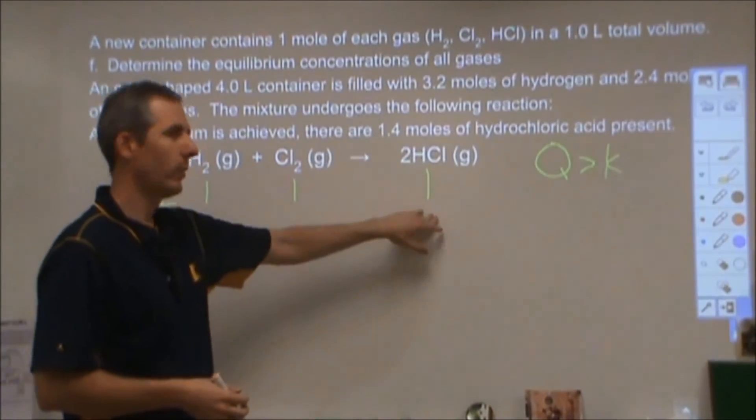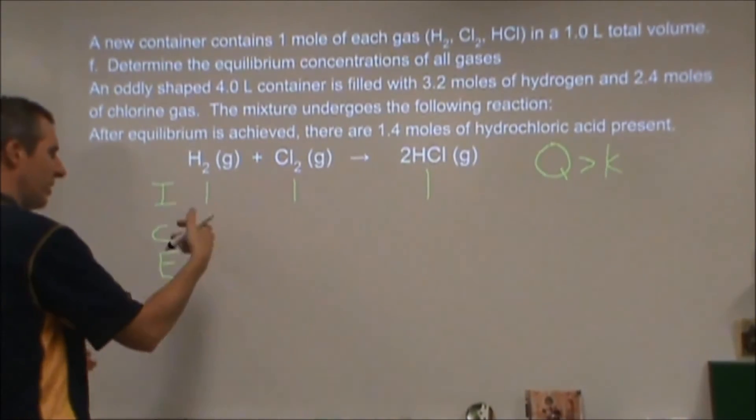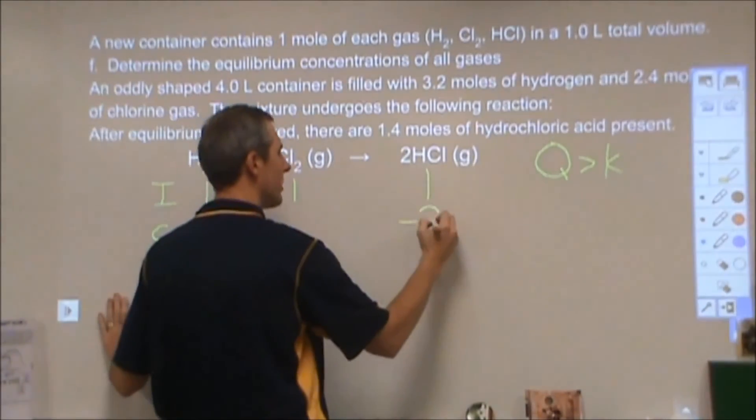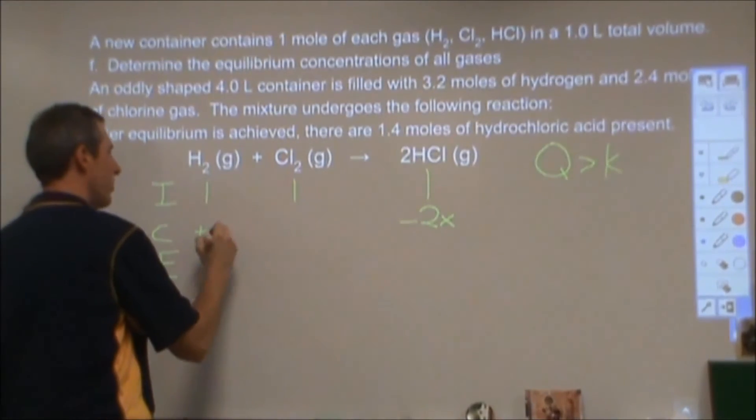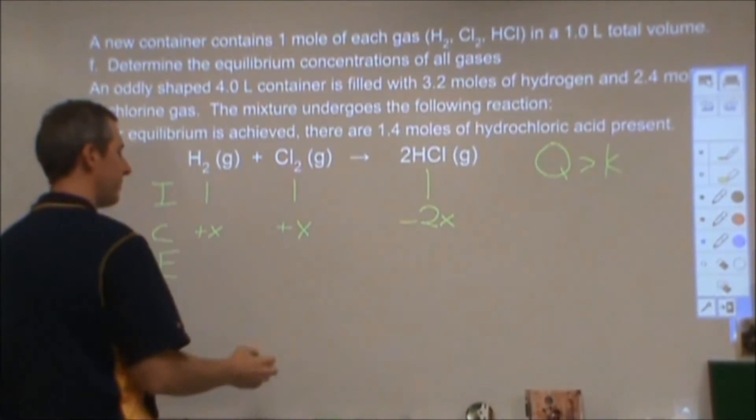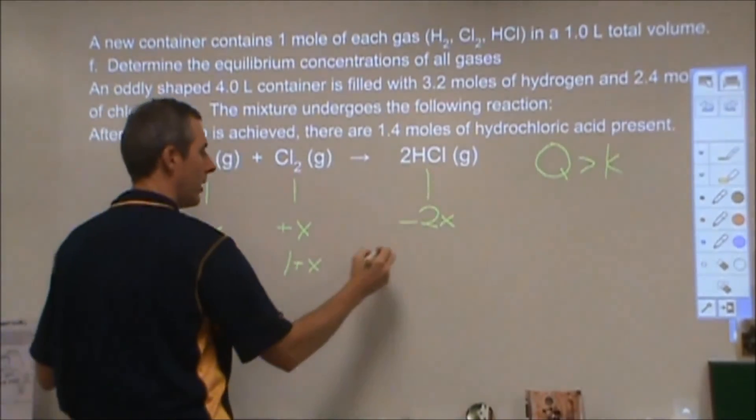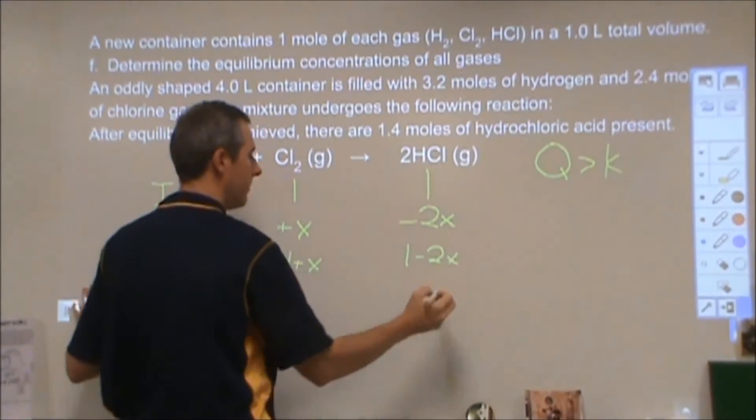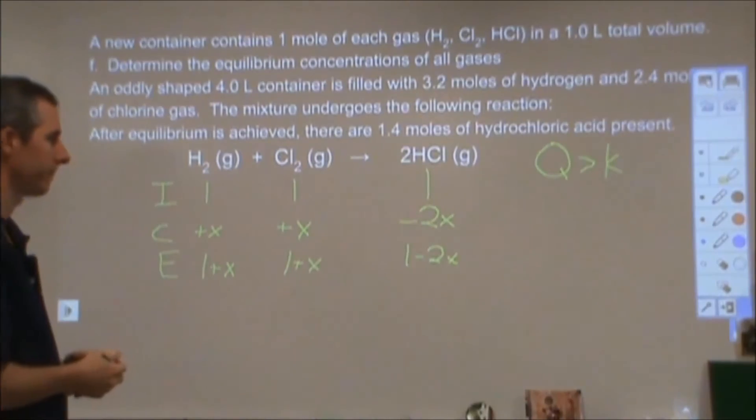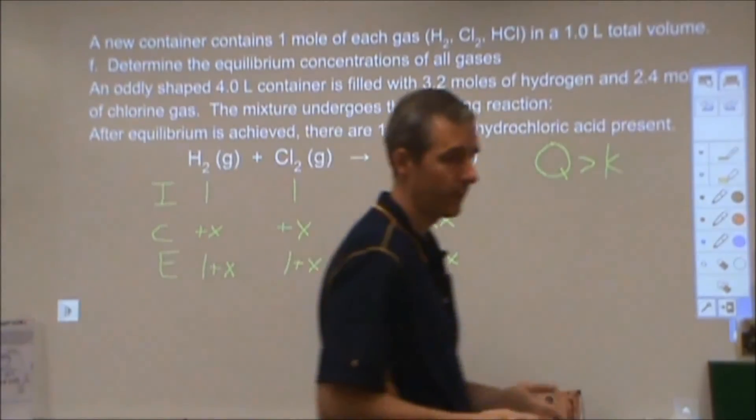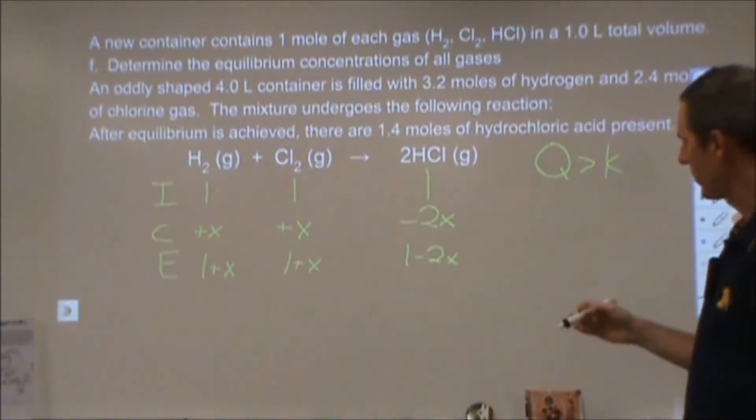And the Q being bigger than K, what that does is that tells you whether to lose X or gain X, lose 2X or gain 2X. We're going to be shifting to the left, so we're going to lose some of our product net. We're going to gain some reactants net. So we're going to have 1 plus X, 1 plus X, and 1 minus 2X at equilibrium. We know our equilibrium constant from before. That was the 0.461.